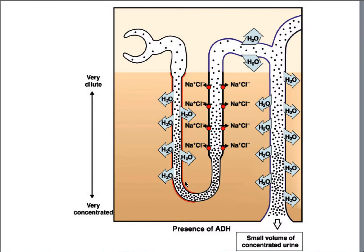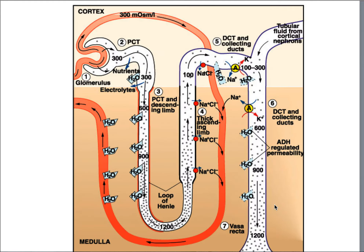What happens when ADH is present? It opens the doors to allow water to move back into the body. Now, because water is being reabsorbed, you're going to have a low volume, concentrated, probably yellow urine, and it's a high osmolarity.